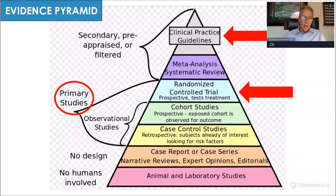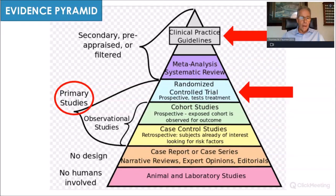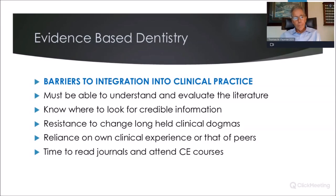Clinical practice guidelines are determined by expert panels that look at all the research, do systematic reviews, and come to conclusions — so that's where we should look: clinical practice guidelines, meta-analyses, and systematic reviews. When you look at primary studies, it goes: randomized controlled trials, then cohort studies, case-control studies, case reports, and finally animal or laboratory studies — which is where everything tends to start in clinical practice.